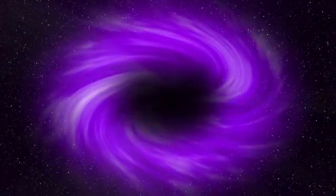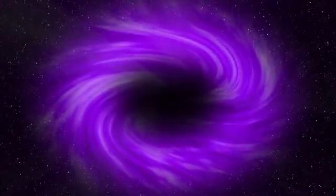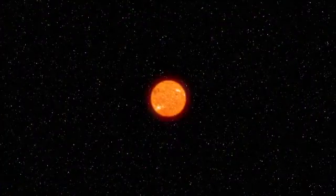After a supernova, if the star's core has four or more times the mass of our sun, the remaining core collapses into a black hole, with a densely packed mass equivalent to 20 suns. Our own sun is too small to end life as a black hole.